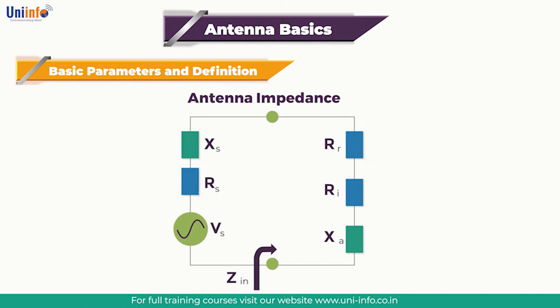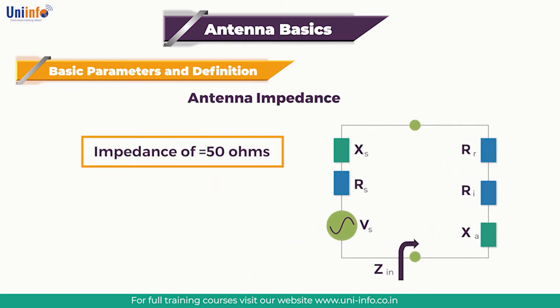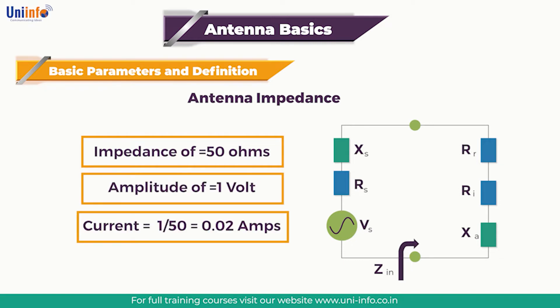In this course we are going to cover antenna impedance. Antenna impedance relates the voltage to the current at the input to the antenna. This is extremely important. For example, if an antenna has an impedance of 50 ohms, and a sinusoidal voltage is applied at the antenna terminals with an amplitude of 1 volt, then the current will have an amplitude of 1/50, which equals 0.02 amperes.